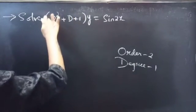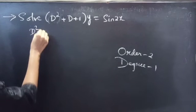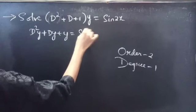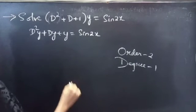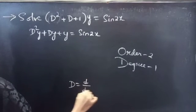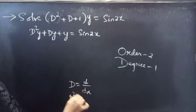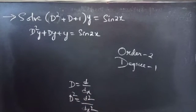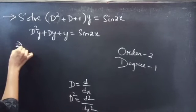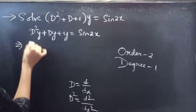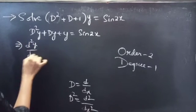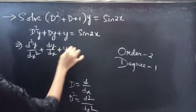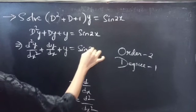We can also write the given differential equation as d²y + dy + y = sin 2x. We know that differential operator D is d/dx, and D² will be d²/dx². So we can write the given equation as d²y/dx² + dy/dx + y = sin 2x.